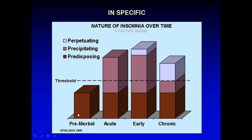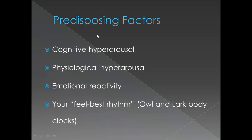The predisposing factors are pre-morbid factors. And then you have an acute event, like acute stress. Early in the course of insomnia, there is a little bit of a perpetuating factor. The predisposing factors include cognitive hyperarousal, physiological hyperarousal, emotional reactivity, and your circadian rhythm — based on whether you are an owl or a lark.